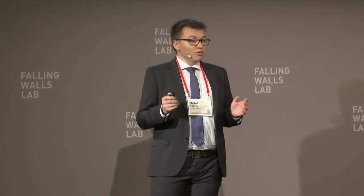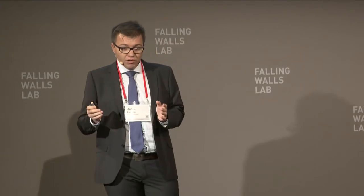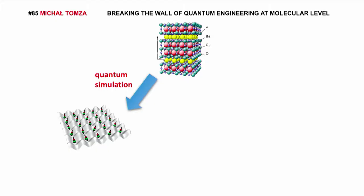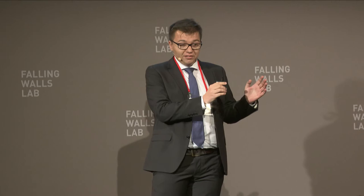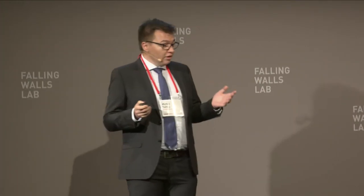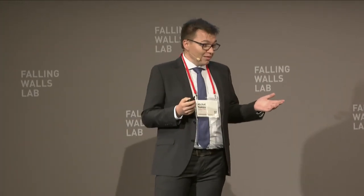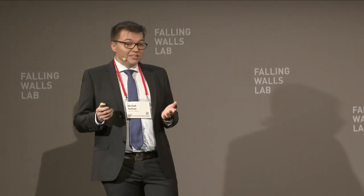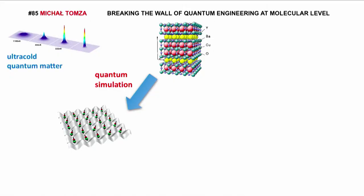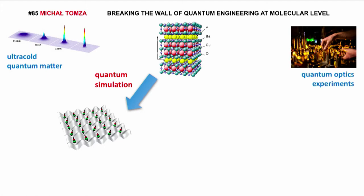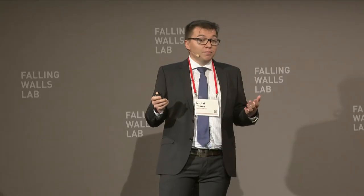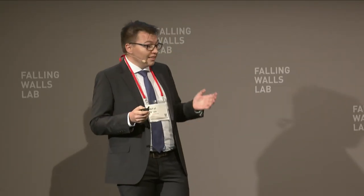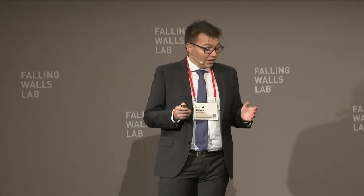Our solution to this problem is the use of quantum simulation. Quantum simulation is the approach where we try to understand the behavior of one quantum system using another quantum system, which is much easier to control and measure. Atoms at ultra-low temperatures, which form real quantum matter, are a very promising candidate. Such quantum simulations can be realized in quantum optics experiments, where we have already produced new states of matter with control at the single atom level.